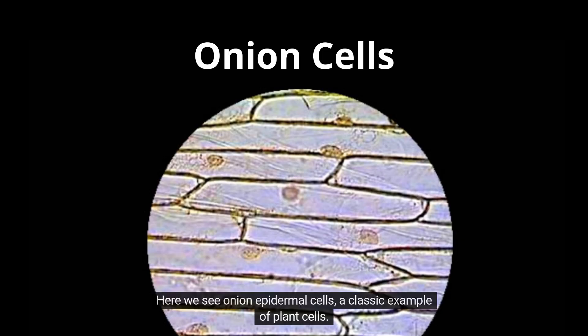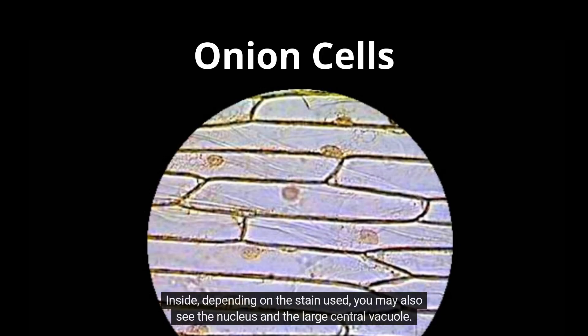Here we see onion epidermal cells, a classic example of plant cells. Notice the clear rectangular shape of each cell — this is due to the rigid cell wall. Inside, depending on the stain used, you may also see the nucleus and the large central vacuole.